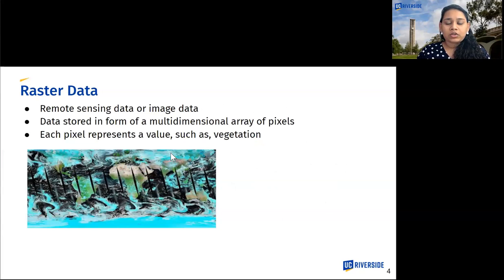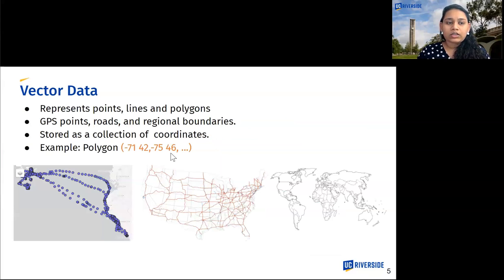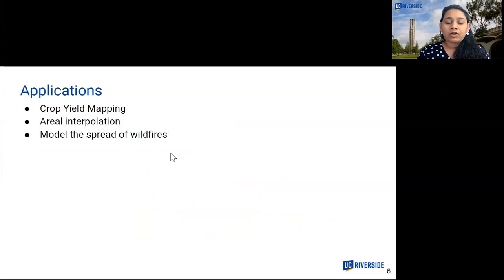Raster data refers to remote sensing data or image data. It is represented as a multi-dimensional array of pixels where each pixel represents a value such as vegetation. On the other hand, vector data represents points, lines, and polygons. A few examples of vector data include GPS points, roads, and regional boundaries, and it is stored as a collection of coordinates. A few applications that use raster and vector data include crop field mapping, error interpolation, and wildfire modeling.